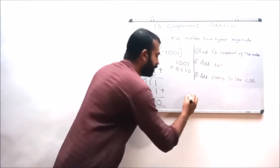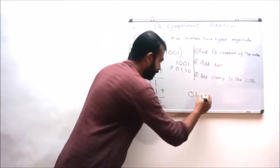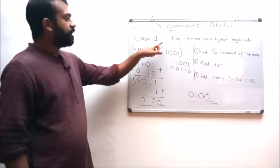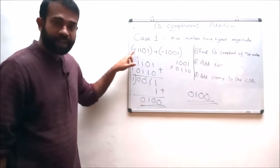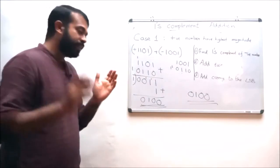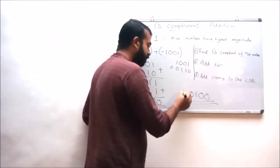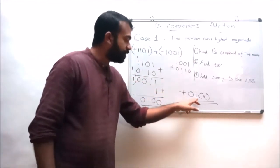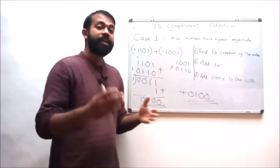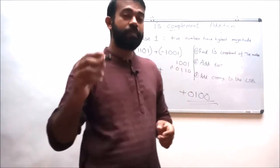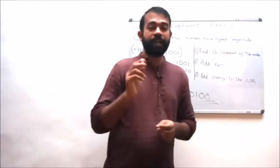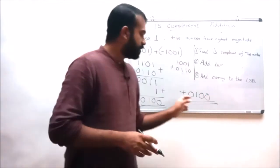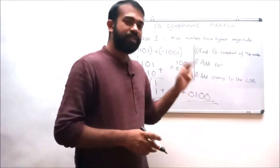The final answer is 0100. Since the highest number is positive, the result is always positive. So the final answer is plus 0100. This plus sign can be replaced by the MSB binary representation 0, so the final answer can also be represented as 00100.